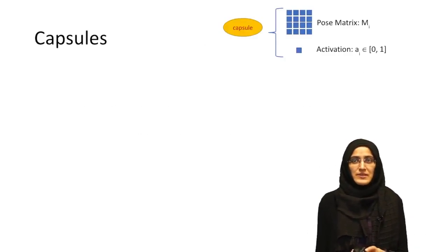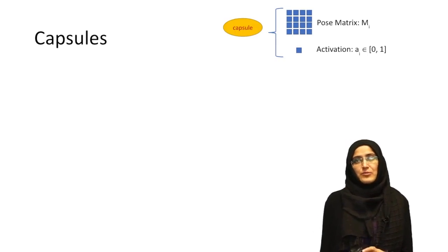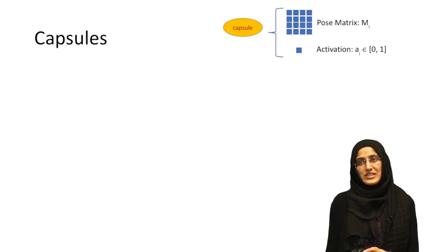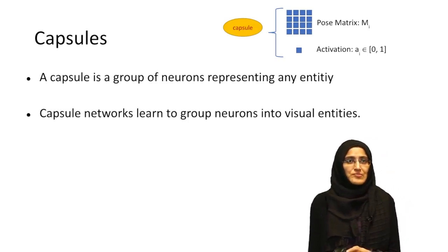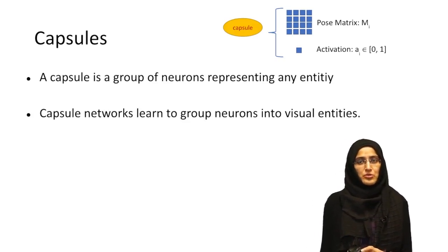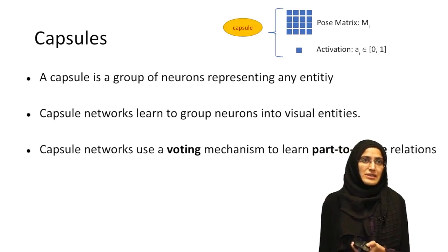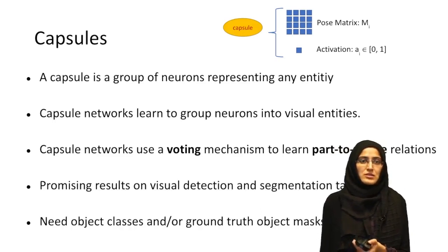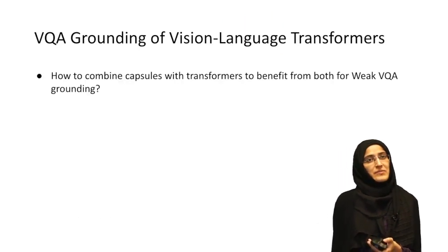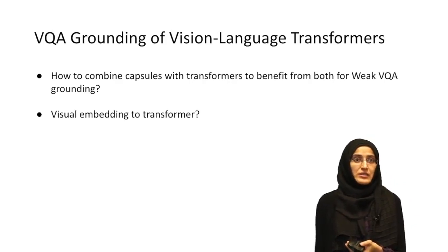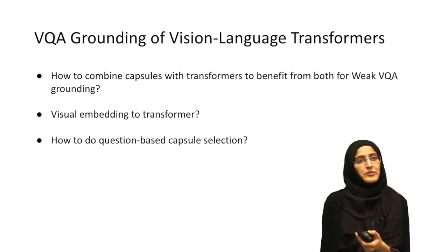What are capsules? A capsule is basically a group of neurons represented by a pose matrix. This group of neurons represents an entity, and the pose matrix shows the properties of that capsule. We also have an activation, which is a scalar value telling us the presence of that capsule. Capsule networks learn to group neurons into visual entities, using a voting mechanism to learn part-to-whole relationships between consecutive capsule layers. However, existing capsule networks need object classes or ground truth object masks to be trained, which we do not have. The key question is how we can combine capsules with transformers for weak VQA grounding, and how to use the question for capsule selection.